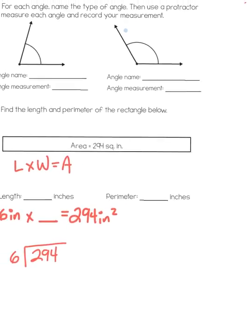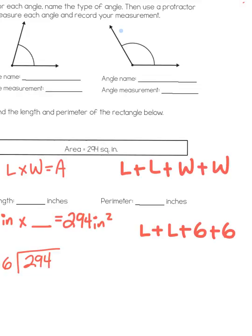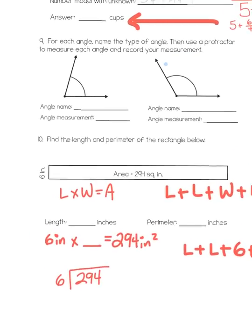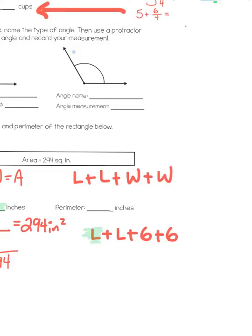Then, to solve for perimeter, the perimeter problem is length plus length plus width plus width when it comes to a rectangle. So, if I already know that 6 is the width, my problem would look like this. Length plus length plus 6 plus 6. So, what we need to find is the measure of the length. So, once you determine the measure of the length in inches, you're going to then replace these two L's with those numbers and then you'll be able to find the perimeter.